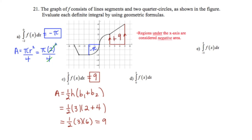Moving to part D, we find the area from 0 to 5. We already have from 2 to 5 done. We just need to capture the quarter circle from 0 to 2, which is above the x-axis so its area is positive pi. Going from 0 all the way to 5, it's the sum of those two regions: pi plus 9. Addition is commutative, so the order doesn't matter.